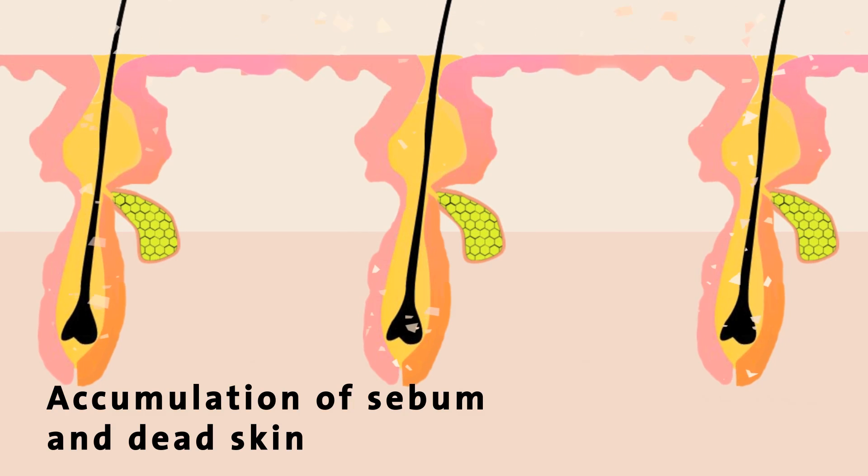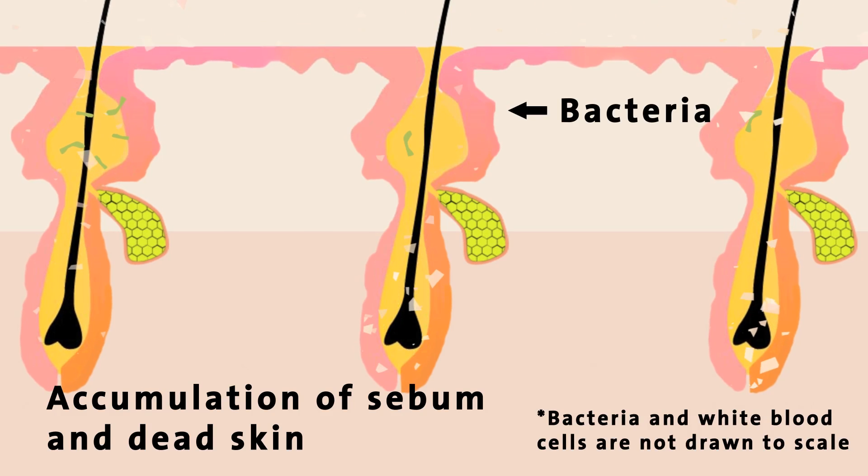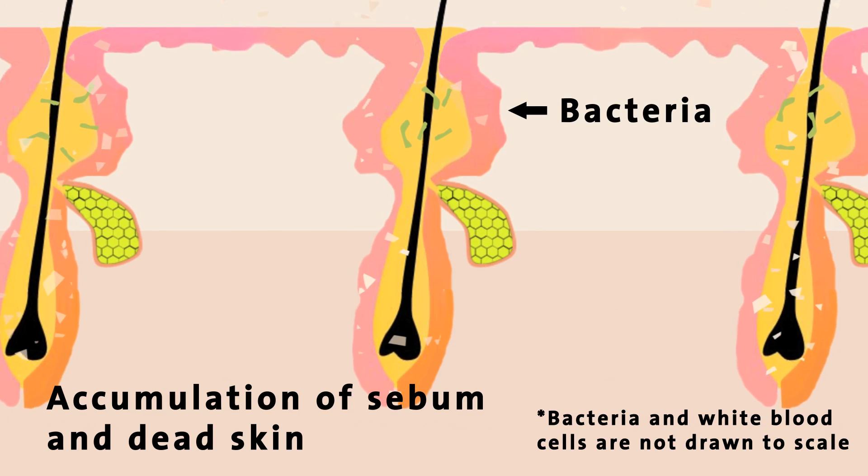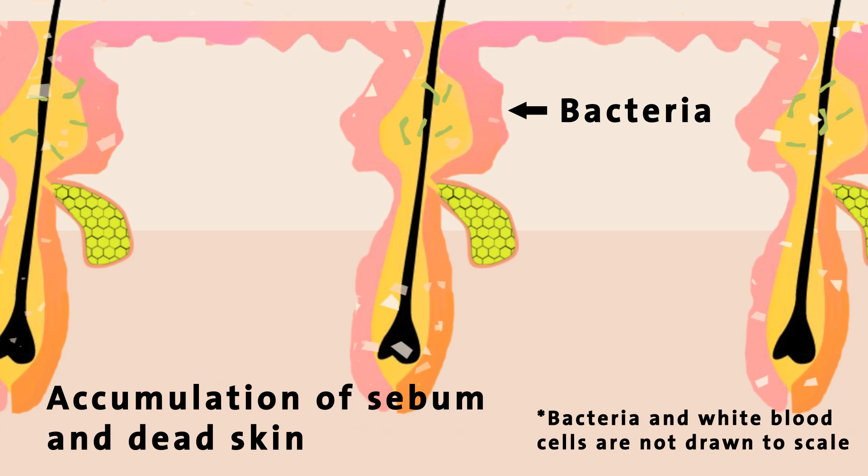A blocked skin pore also contains bacteria. They feed off dead skin cells and the clogged sebum within the pores, producing toxins that damage the lining of the pores. As these bacteria grow and multiply, they invade the area surrounding the pore, which can lead to a bacterial infection.